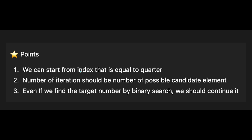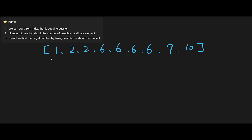Key point one: we can start from the index equal to quarter. Total length is 9, divided by 4 equals 2, so we start from index 2, not index 0. The number at index 0 is the same as index 2 if it's a valid answer.